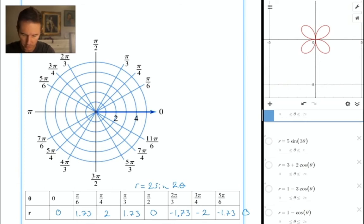Our first point is 0, 0. So we're aiming in the direction of 0, moving 0 units, which causes us to plot a point at the pole. Then aiming in the direction of pi over 6, we're going out about 1 and 3 quarters. At pi over 4, we're going out 2. At pi over 3, same amount, about 1 and 3 quarters. Then back to the origin when theta is equal to pi over 2.